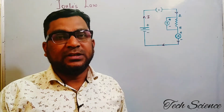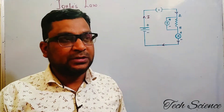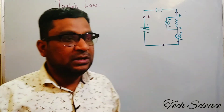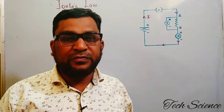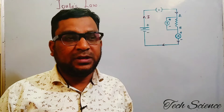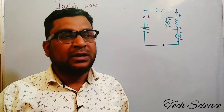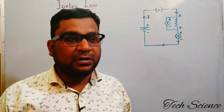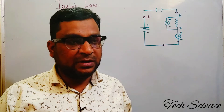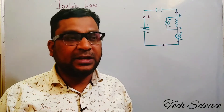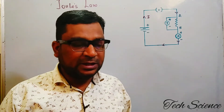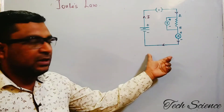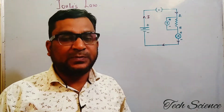Hello guys, you are with Tech Science. Today we discuss a new point from the chapter 'Effect of Electric Current' — the point is called Joule's Law. The question can be asked in two different ways: first, 'Derive an expression for Joule's Law along with the statement,' and sometimes, 'Obtain an expression for the heat energy produced in a metallic conductor when a current flows.' Before starting, we have one diagram on the basis of which we can derive the expression for Joule's Law.